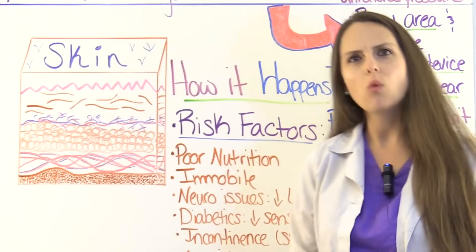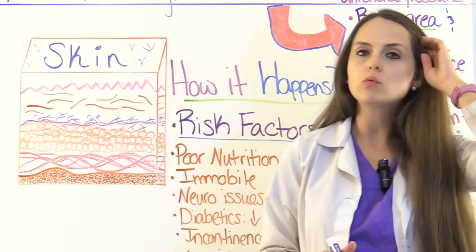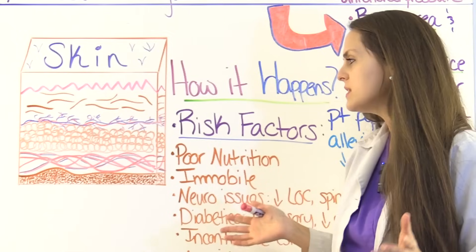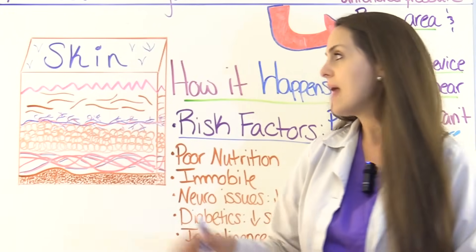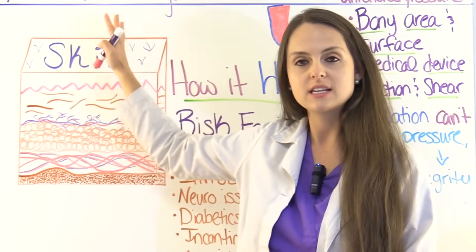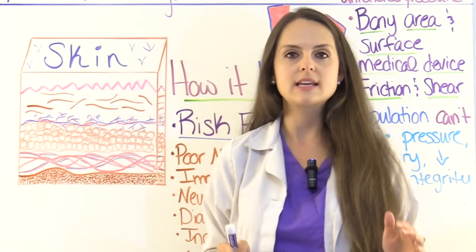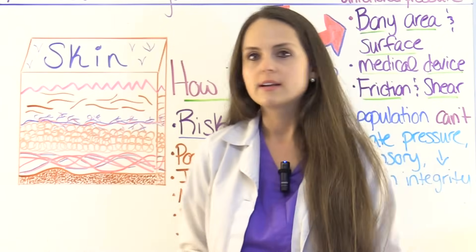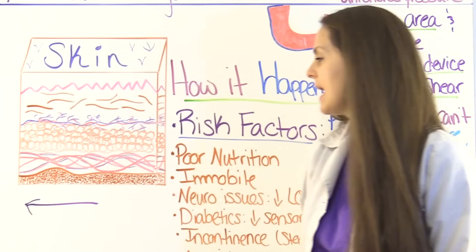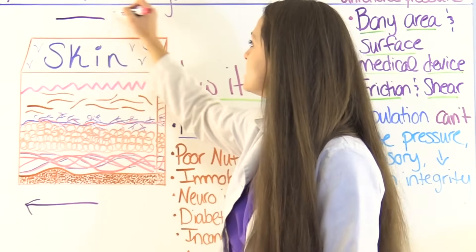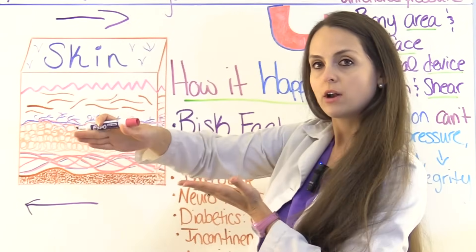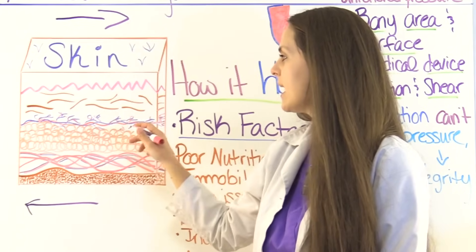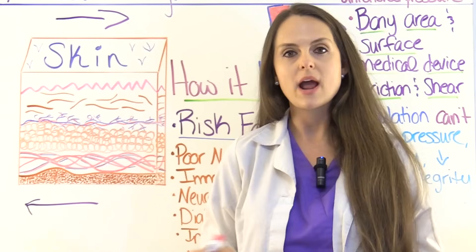Now let's talk about friction and shear. As a nurse, we want to make sure we're not doing activities that cause this, because it can cause a pressure injury. Friction and shear occurs when the bone — the bottom layer — moves in the opposite direction of the skin. A common way this happens is if your patient is sitting in bed and sliding down. The coccyx moves one way while the skin moves the other way. These two opposing forces tear the capillary bed, causing decreased perfusion — a perfect site for a pressure injury.